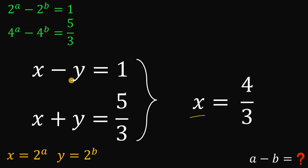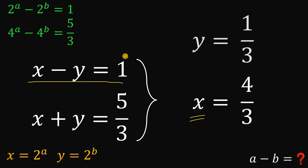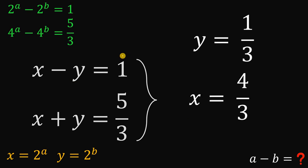Now we know the value of x, and since x minus y equals 1, y must equal 1 over 3. Because 4 over 3 minus 1 over 3 gives us 1. So now we know the values of both x and y.